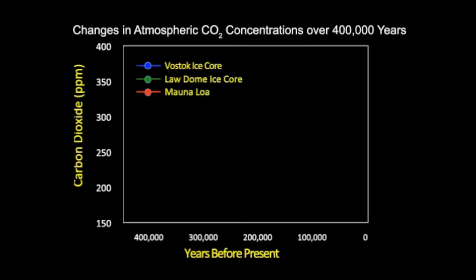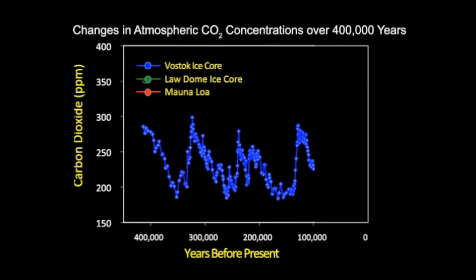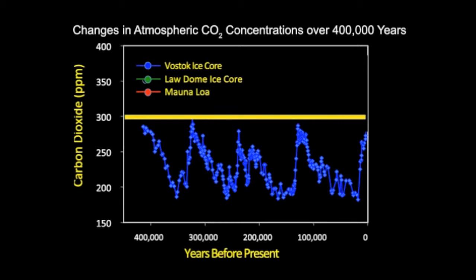For 400,000 years, CO2 concentrations fluctuated but never exceeded 300 parts per million. However, since the advent of the Industrial Age in the 1800s, concentrations have risen rapidly to reach the current concentration of 390 parts per million.